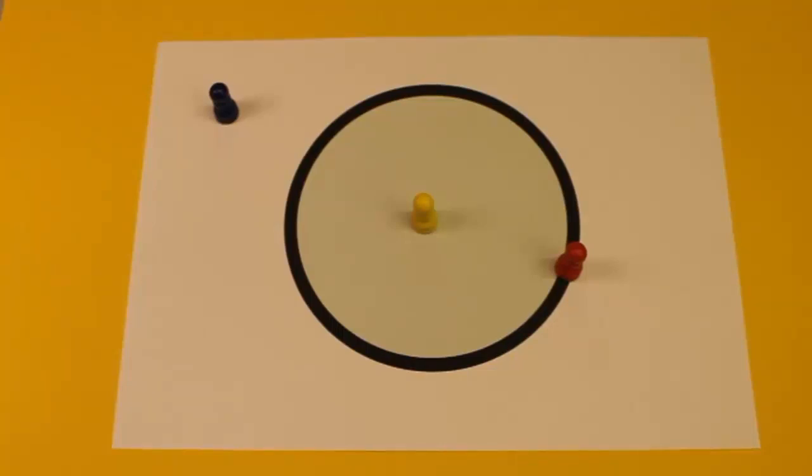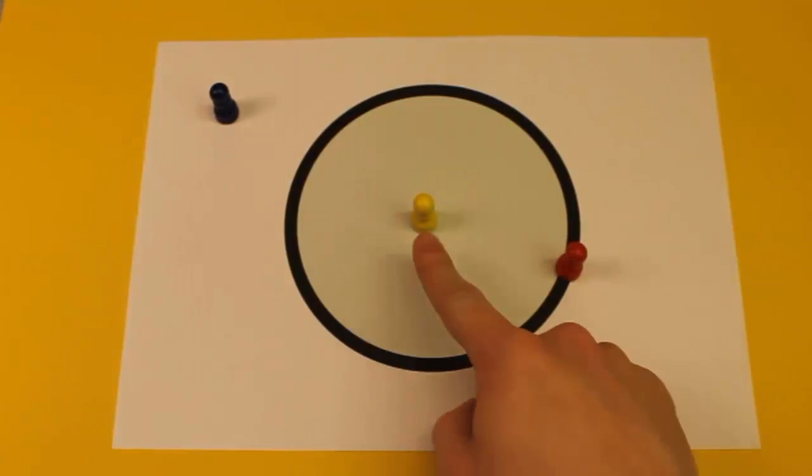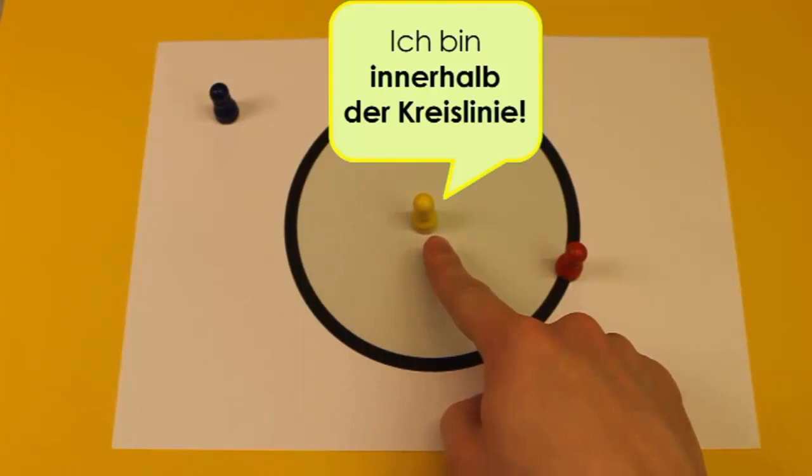Beginnen wir mal beim gelben Kegel. Wie ihr sehen könnt, steht dieser gelbe Kegel auf der grün bemalten Fläche. Also befindet sich dieser gelbe Kegel innerhalb des Kreises.